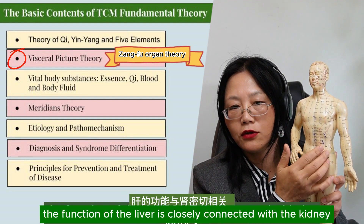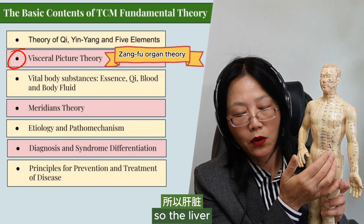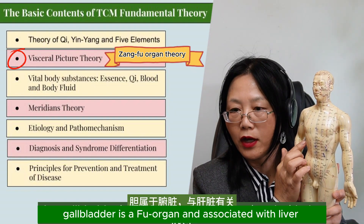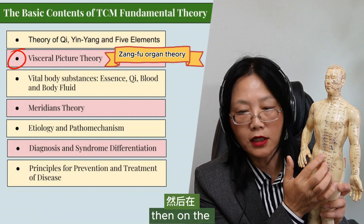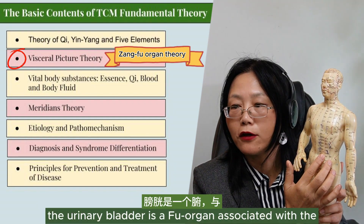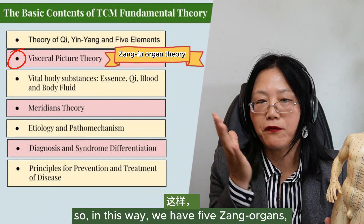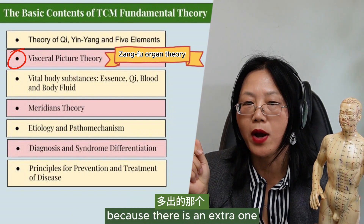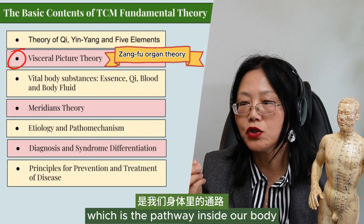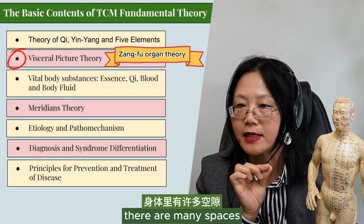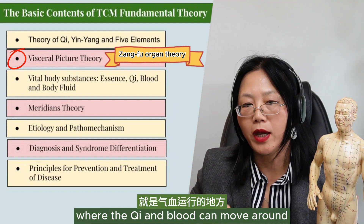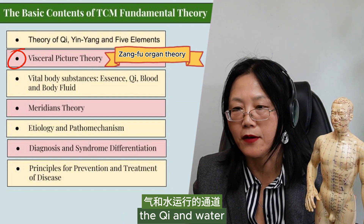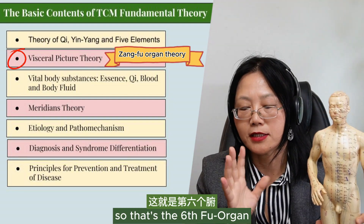Because the function of the liver is closely connected with the kidney, in TCM thinking the liver belongs to the lower jiao, the lower part of the body. The gallbladder is a fu organ associated with the liver. On the lower part, the urinary bladder is a fu organ associated with the kidney. In this way, five zhang organs and five fu organs pair up. However, we have six fu organs — the sixth one is called the triple energizer, which is the pathway inside our body where qi and blood can move around. The place for circulating the qi and the water is called the triple energizer.